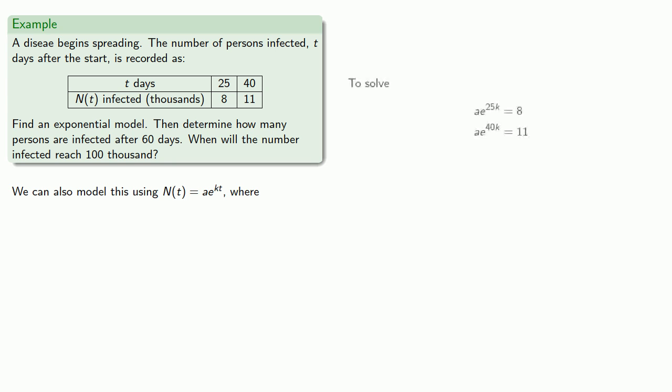So to solve this system of equations, the thing we might notice is that both equations have this factor of a on the left-hand side. And so if we divide the two equations, we'll be able to eliminate that common factor of a. So let's divide the larger by the smaller to avoid fractions.